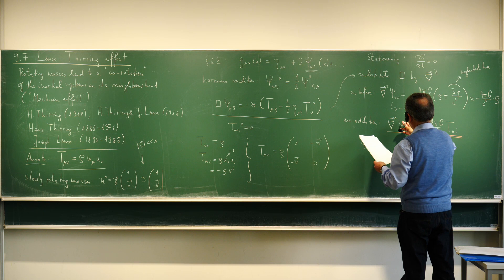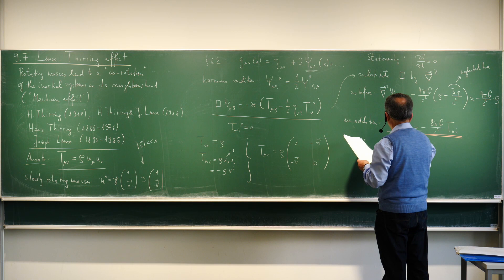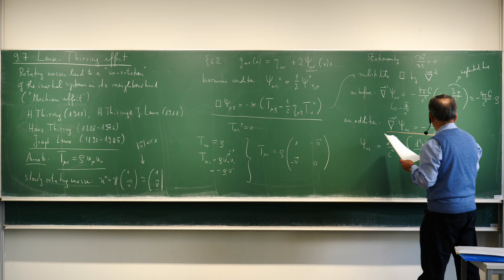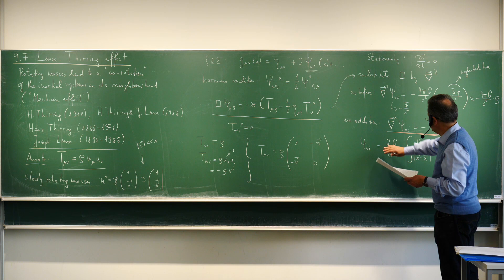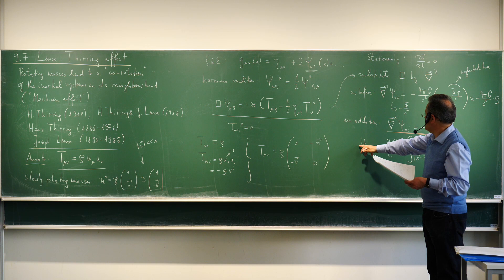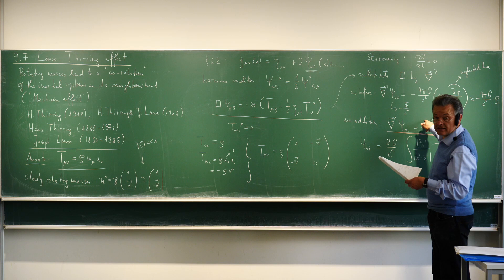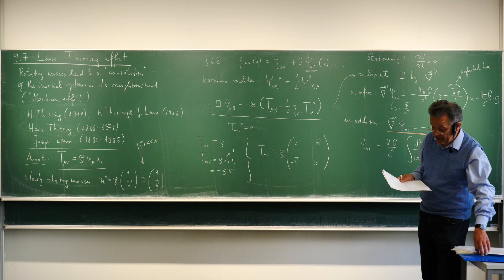From this Poisson-type equation we can formally integrate: ψ_{0i}(x) = (2G/c²) ∫ d³x' T_{0i}(x') / |x − x'|. One checks that the Laplacian acting on 1/|x − x'| gives −4π times the delta function — a standard calculation from electrodynamics. We solve this equation by a multipole expansion.